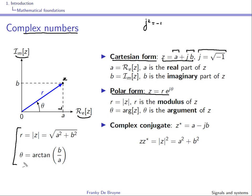We can also define the complex conjugate of Z, denoted Z*, as A minus JB — the imaginary part changes sign. If you take the product of Z and its complex conjugate, you obtain the modulus of Z squared. This is left as an exercise.